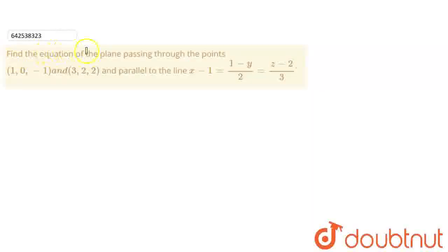So the question is find the equation of a plane passing through the points (1, 0, -1) and (3, 2, 2) and parallel to the line x-1, (1-y)/2 and (z-2)/3.